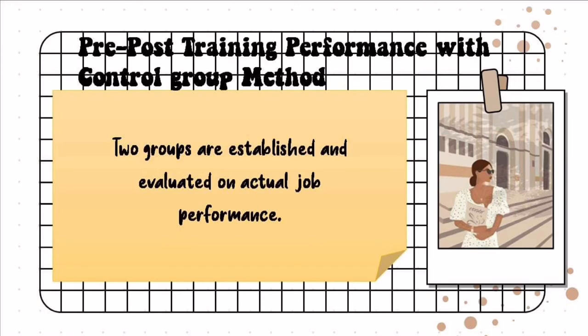Last is the pre-post-training performance with control group method. Two groups are established and evaluated on actual job performance. As I understand it, a control group is also assessed before and after. The key difference is that this method tests the difference between those who receive proper training versus a control group who may not receive any support or instruction. These two groups are compared to see whether there is a difference, proving that the process of training truly has value.